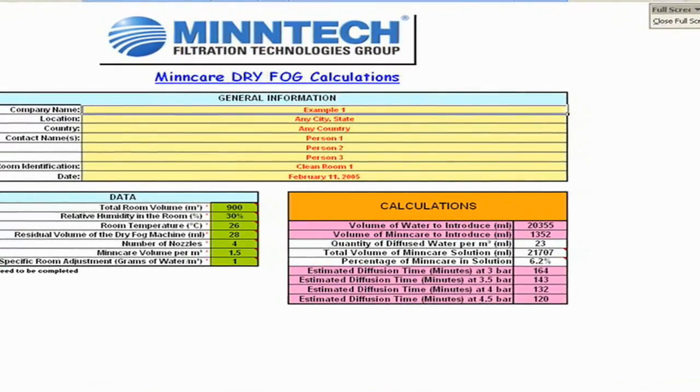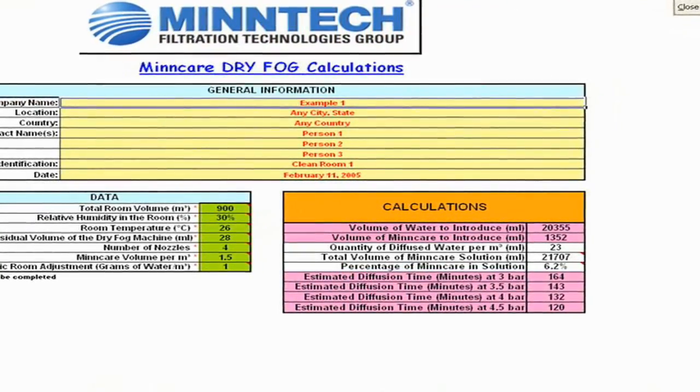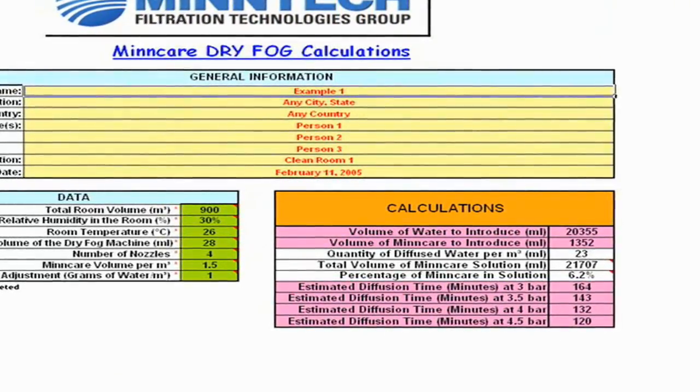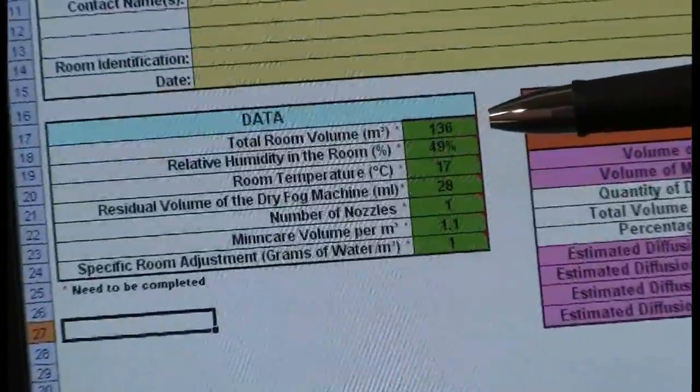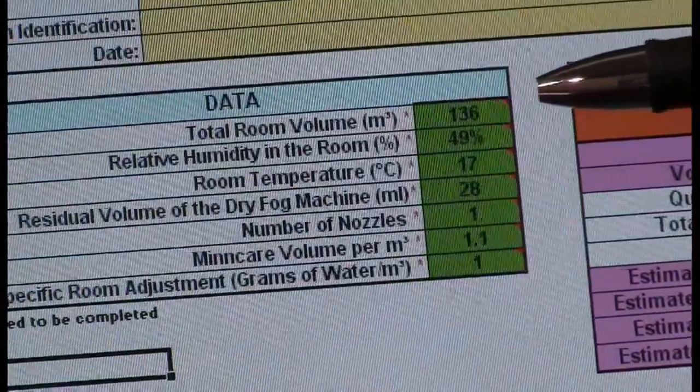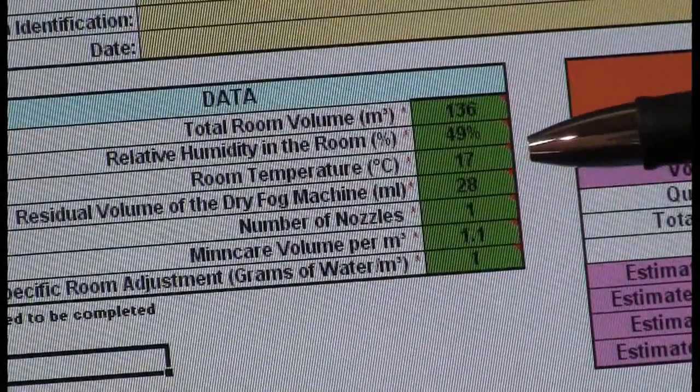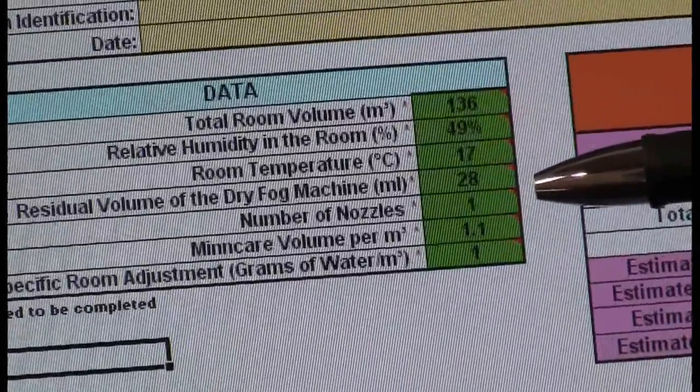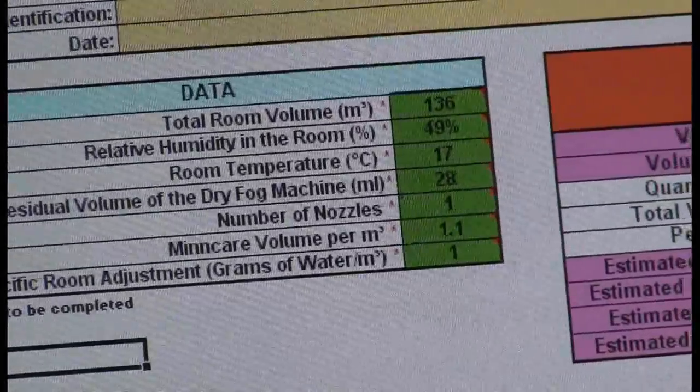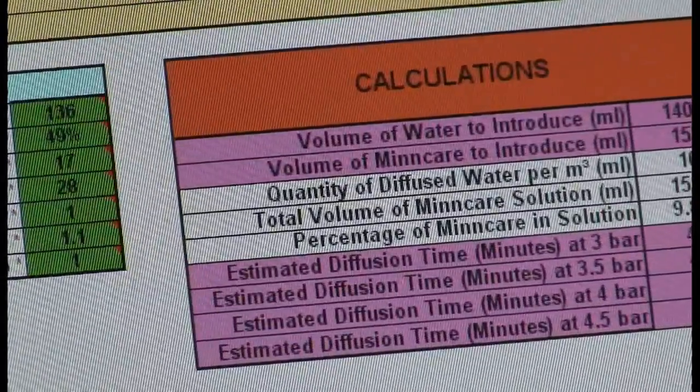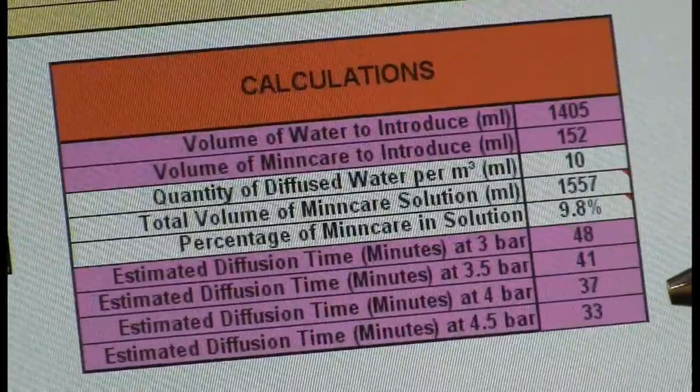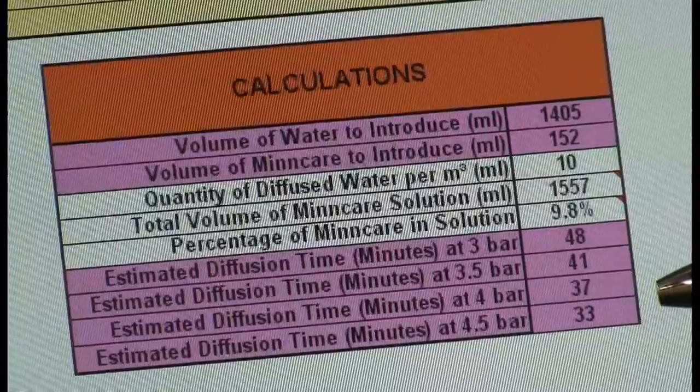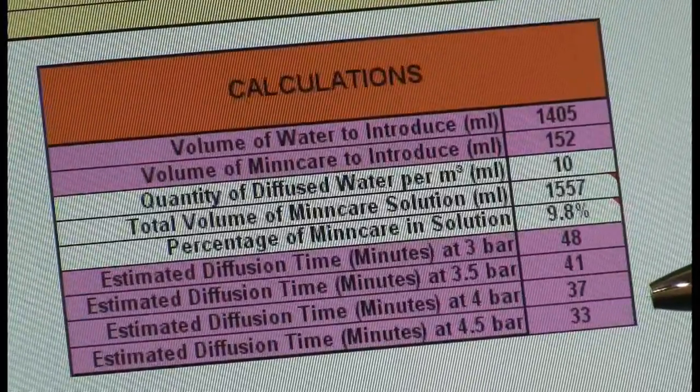With this simple Excel based program that we supply, everything is done for you with the exception of putting in the inputs. So what we calculate here: total room volume in cubic meters or cubic feet converted to cubic meters, relative humidity and temperature at the time of fogging. Input your number of nozzles right here and that will tell you exactly how much water to introduce, how much MinCare to introduce, and at 4.5 bar, which is 65 PSI, it'll take you 33 minutes to completely disperse the dry fog into your clean room.